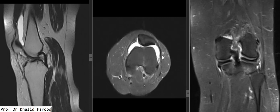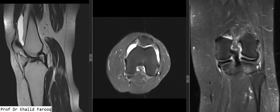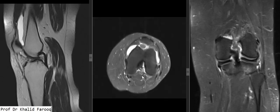The retropatellar cartilage is normal. The medial and lateral patellar retinacula show normal morphology. Here, this is the location of the anterior cruciate ligament, and we see inflammatory tissue over here, suggesting its total transection. This fan-shaped portion is the posterior cruciate ligament.